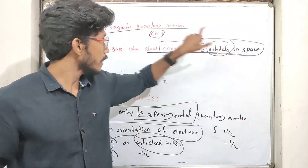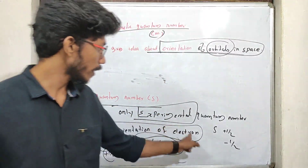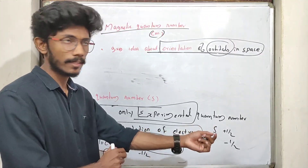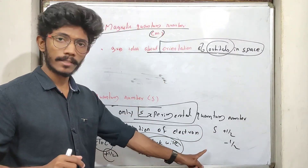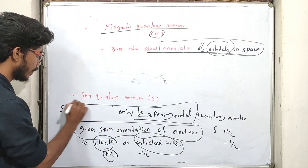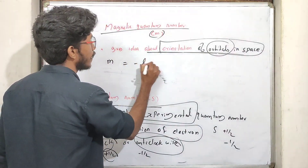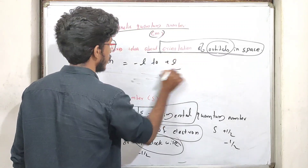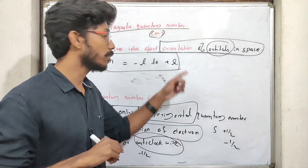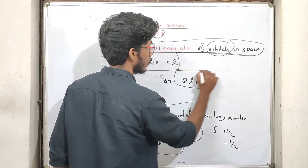The magnetic quantum number gives the idea of orientation of orbitals in space. The spin quantum number gives the orientation of spin of the electron, with a value of plus or minus half. The magnetic quantum number, M, depends on L — it ranges from minus L to plus L, giving 2L plus 1 values.